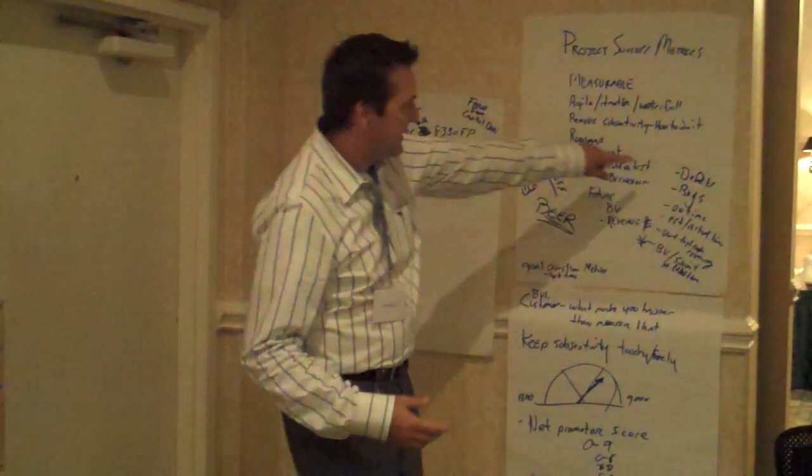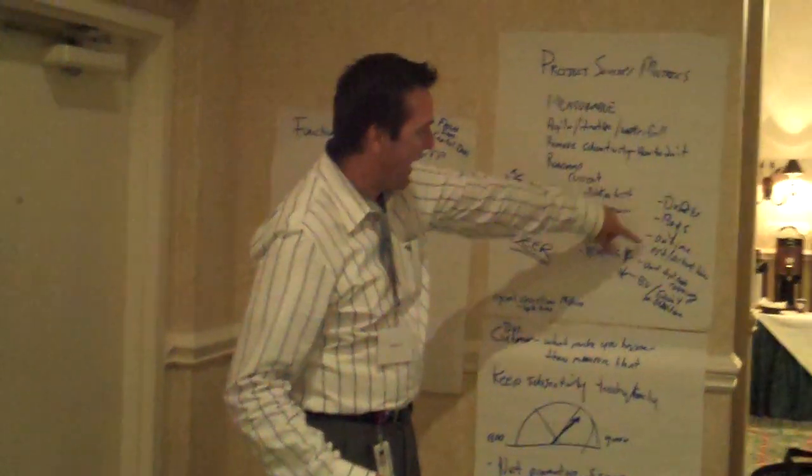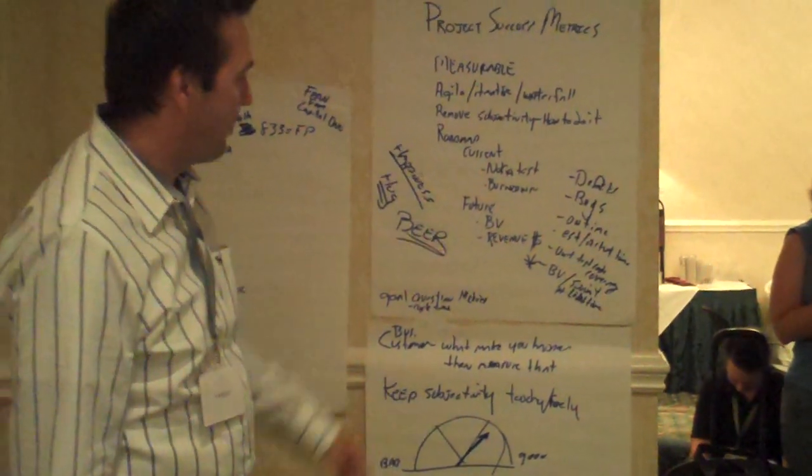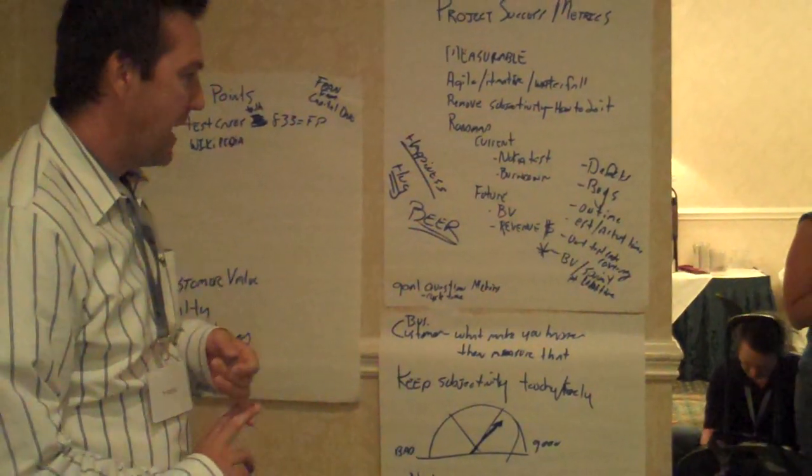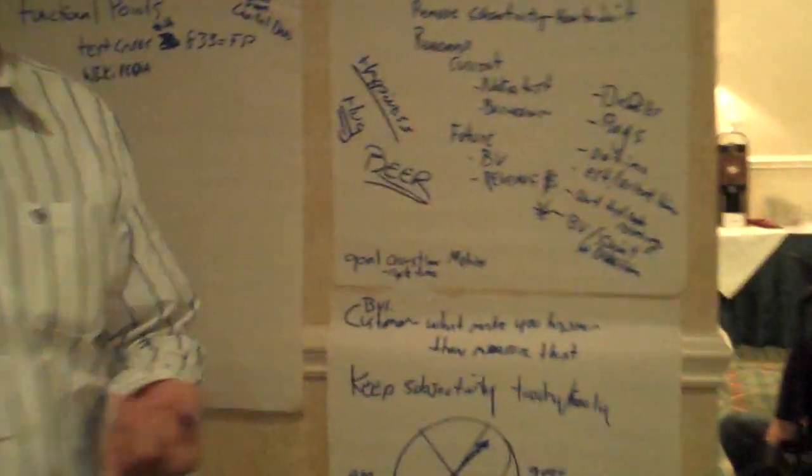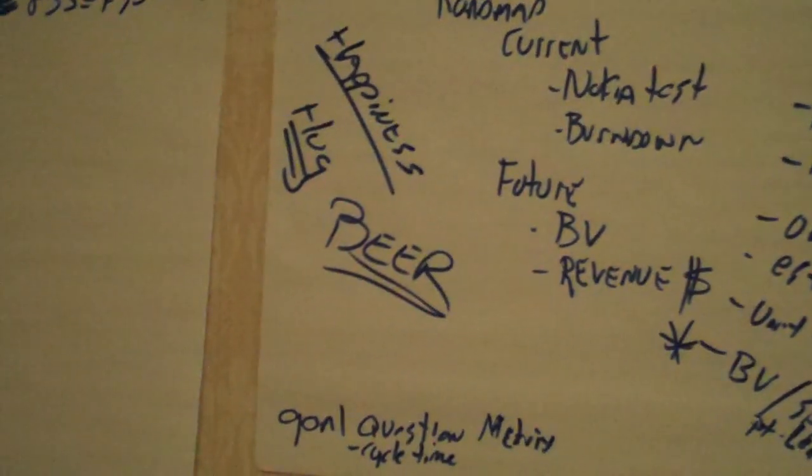A lot of conversation around defects and bugs, tracking, actual versus estimated hours, a lot of focus on story points there. Some of the key things that came out of it was know your goals going into it, let's track business value. Business value can be complicated to get to, but it's important. We've got to get to business value.